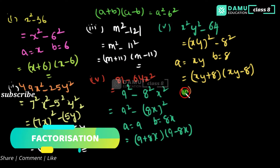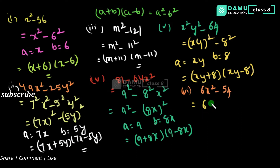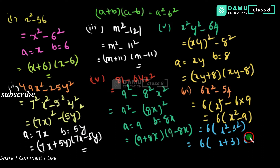The sixth one is 6x squared minus 54. Since 54 is not a perfect square, we take the common factor of 6 outside. So we write 6 times x squared minus 9, since 54 equals 6 times 9. Now x squared minus 9 is x squared minus 3 squared, so we get 6 into x plus 3 into x minus 3.